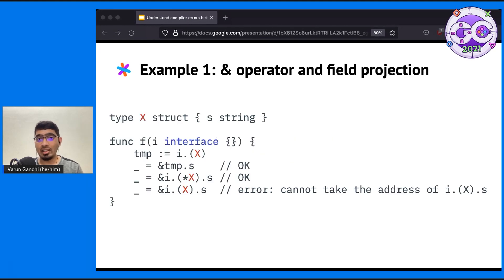Turns out the fourth line in the function will give an error, but the other lines are okay. For the fourth line, the compiler complains that you can't take the address of i.x.s, but it doesn't say why you can't do that. Clearly, there's some reason why taking the address is allowed on the second and third lines, but not on the fourth line. Let's take a look at the spec to understand this better.